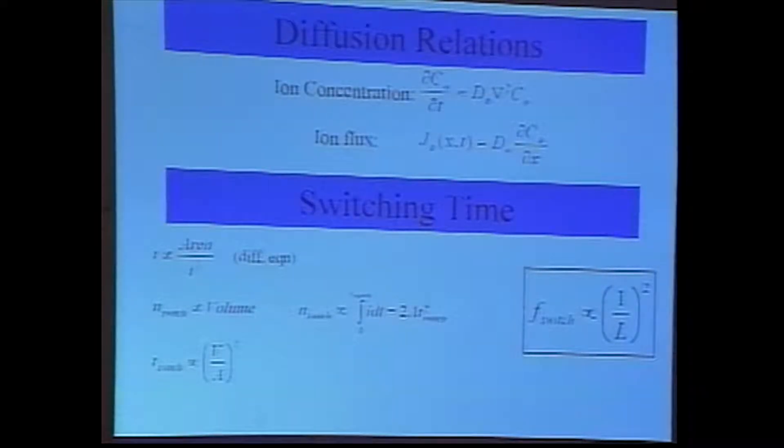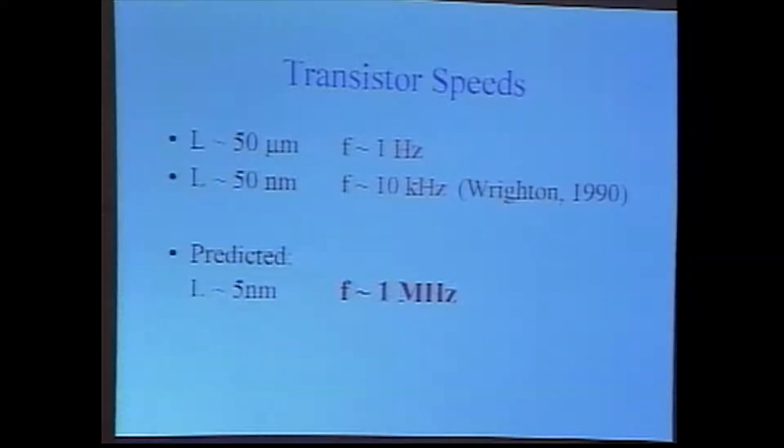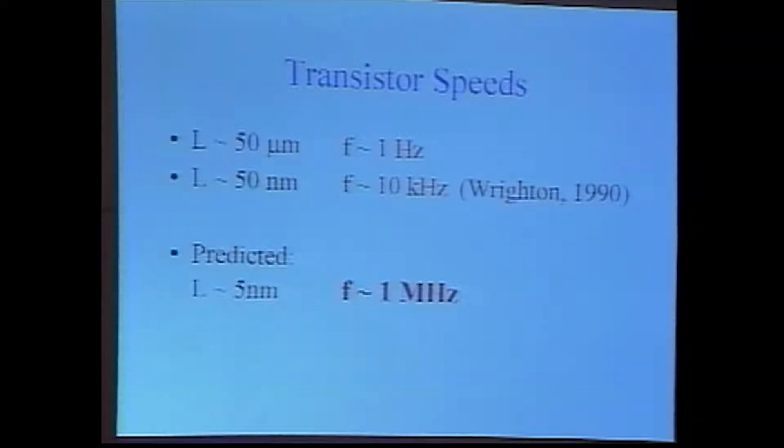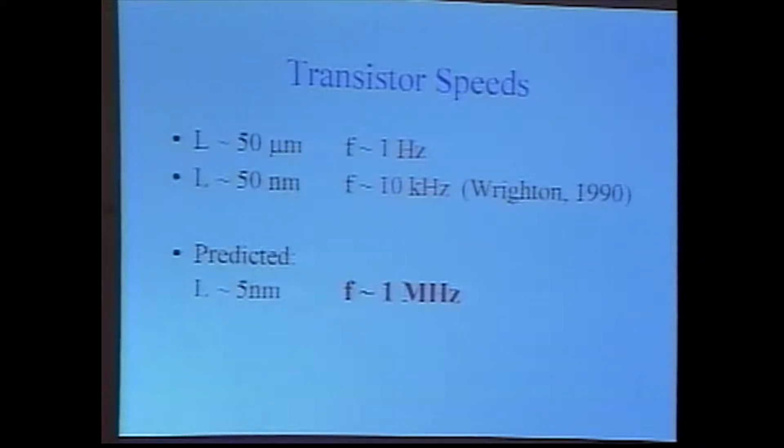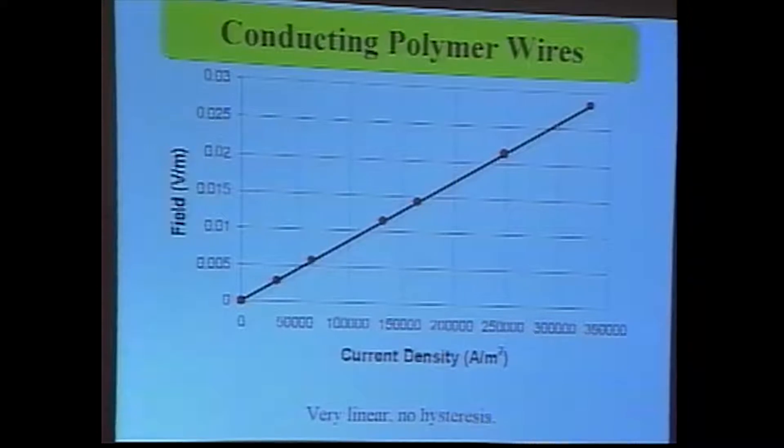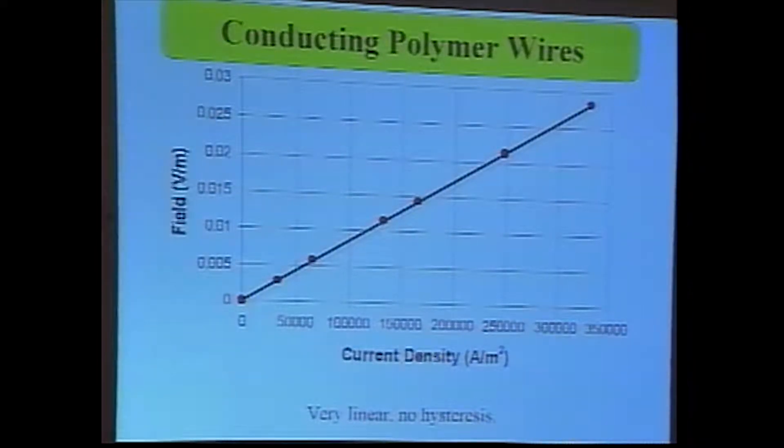The switching times of these devices are governed by different equations from traditional silicon-based transistors. At the moment, they're relatively slow. If you fabricate these materials in bulk, the transistors only have a bandwidth of about 1 hertz. If you go down to about 50 nanometers, 10 kilohertz has been achieved. And certainly, if you go down to thin molecular layers, speeds of 1 megahertz are achievable.